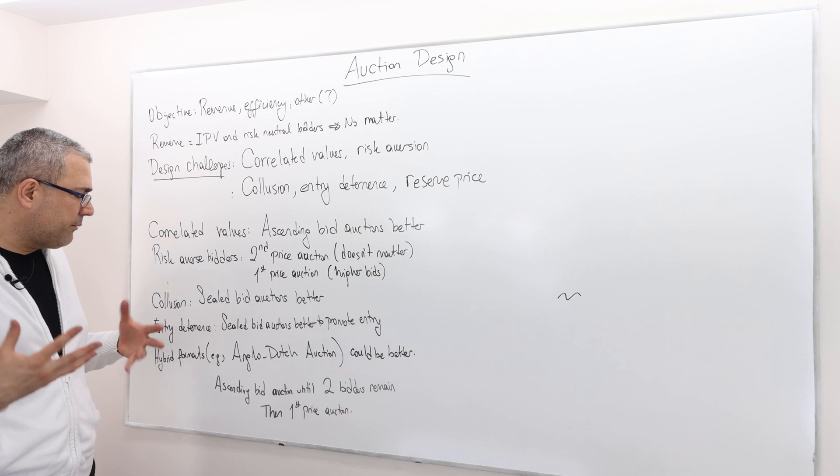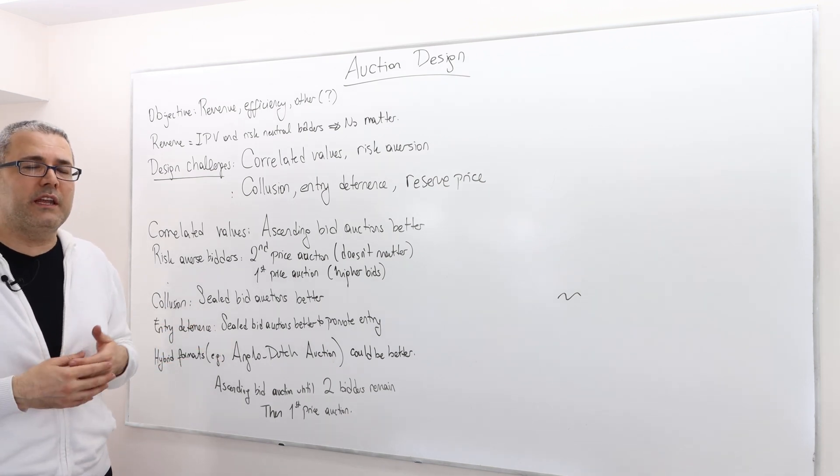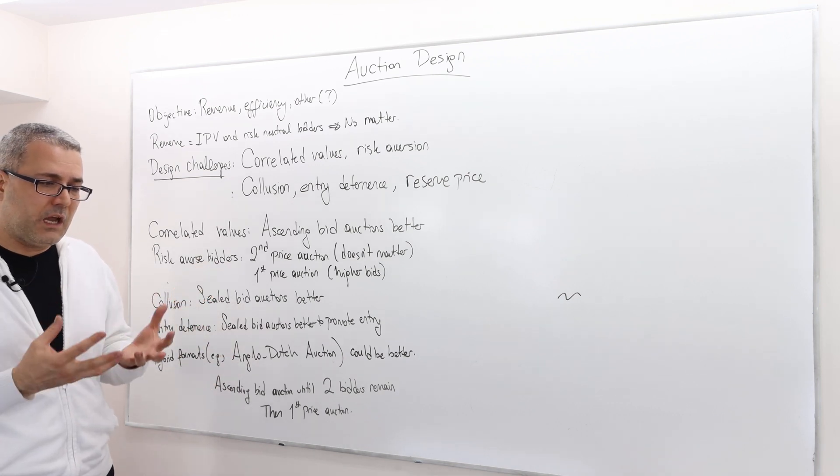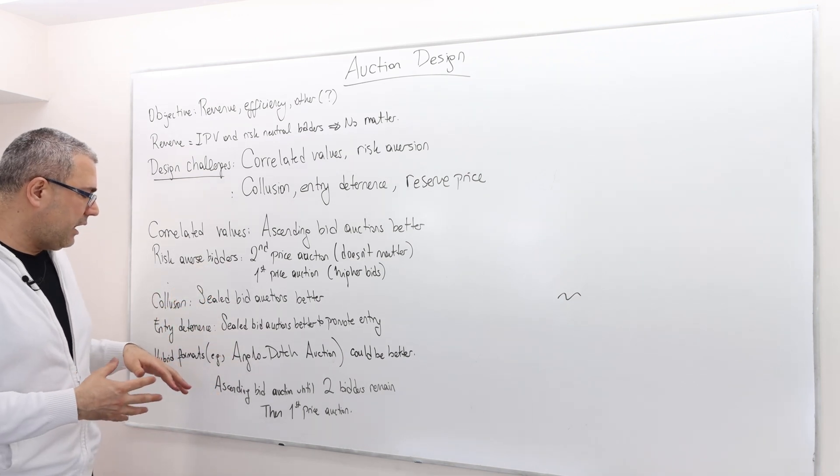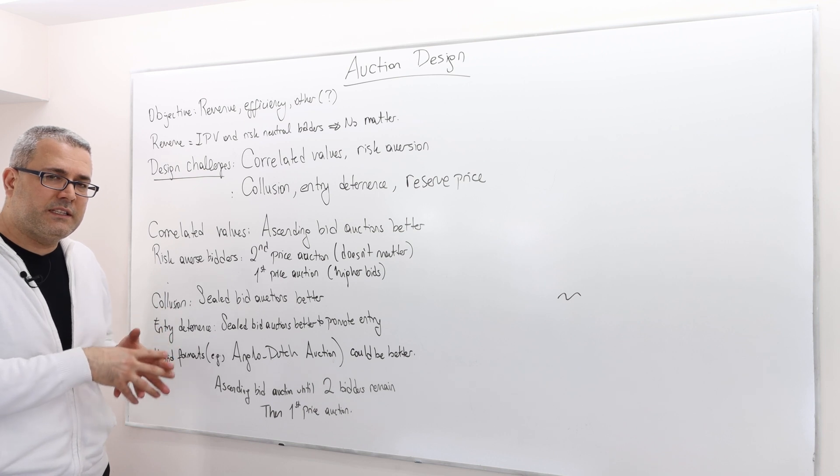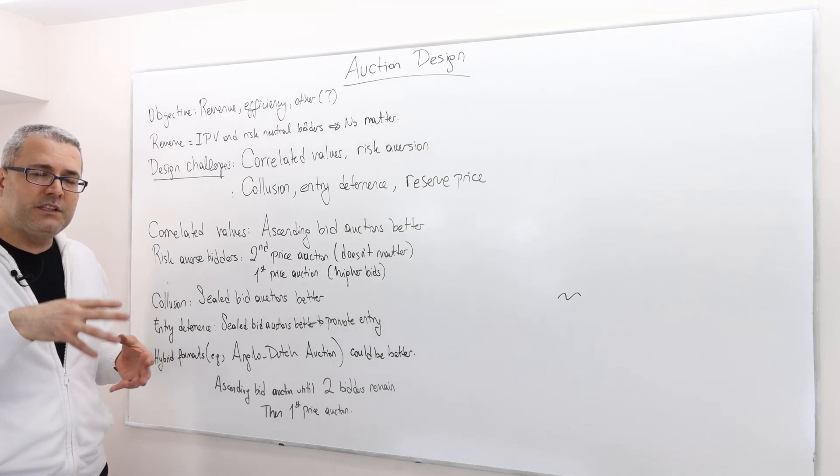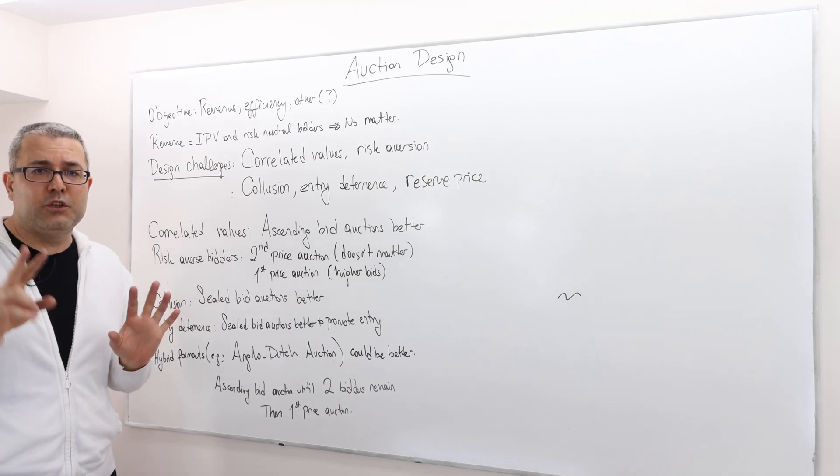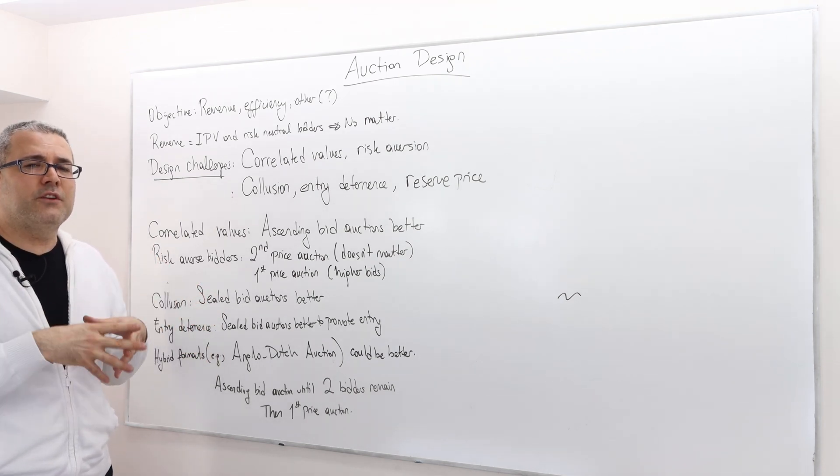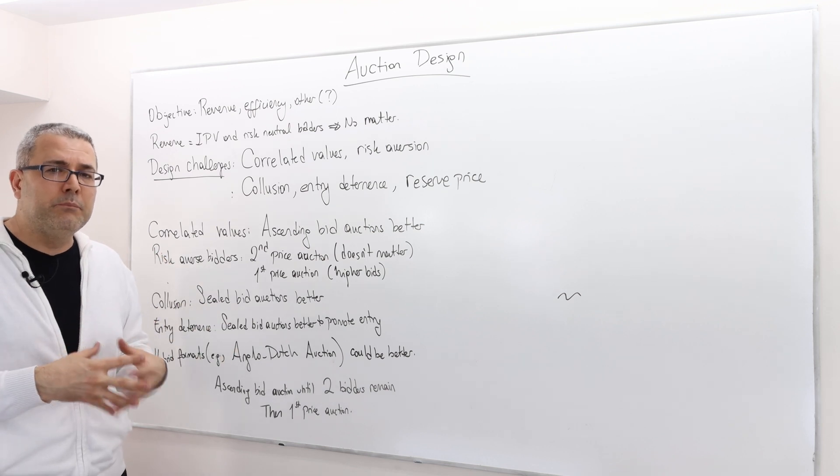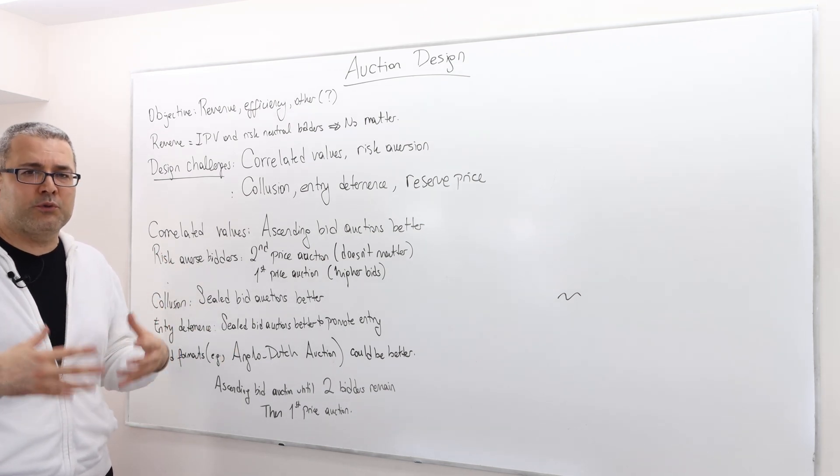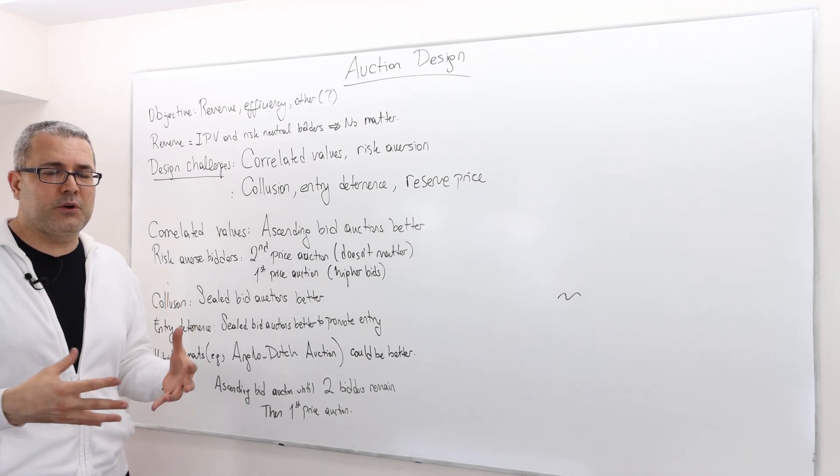Sometimes hybrid formats like the Anglo-Dutch auction can actually perform better. Anglo-Dutch auction is a hybrid version. It works as an ascending bid auction until two bidders remain. Once only two bidders remain, then these two bidders compete with each other in a first price sealed auction.